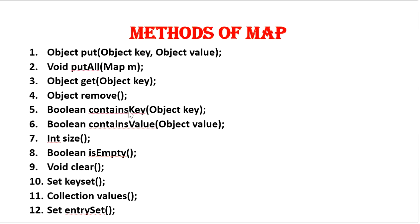Next is containsKey() - if the map object has this key it returns true, otherwise false. Similarly containsValue() - if we pass a value and the map contains it, it returns true otherwise false. Then int size() to check the size, boolean isEmpty() returns true if the map is empty, clear() to clear the map, keySet() to get all keys, values() to get all values, and entrySet() to get all entries in the form of a Set.